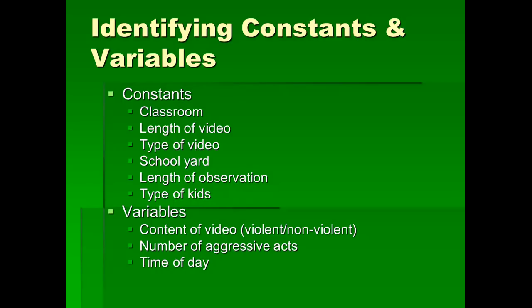The constants in this experiment: the classroom is the same classroom, the length of the video is the same, the type is the same program, the same schoolyard, the same length of observation, and the same type of kids. You may say no — you randomly assigned 25 kids to one condition and 25 to another. That's correct. However, the whole point of random assignment is that it creates equivalent groups — groups which are similar on the major important characteristics. So when I say the same type of kids, I'm actually correct, because the group of 25 kids is relatively similar to the other group of 25 kids. So that's a constant.